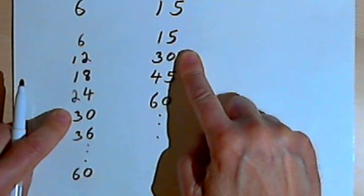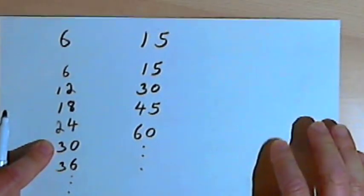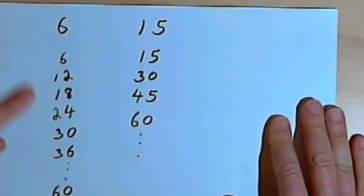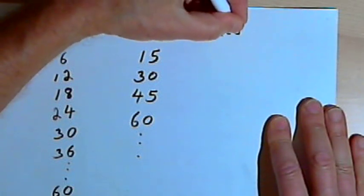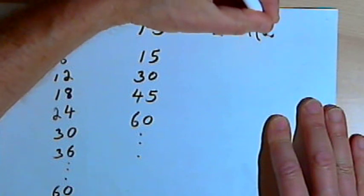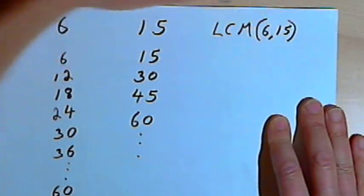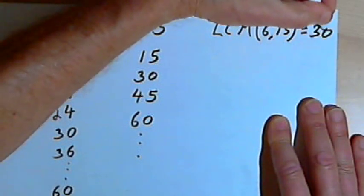So 30 is the least common multiple of 6 and 15. If I want to write that in notation, I'm going to write LCM for least common multiple. In parentheses I'll write 6, 15. So the least common multiple of 6 and 15 is 30.